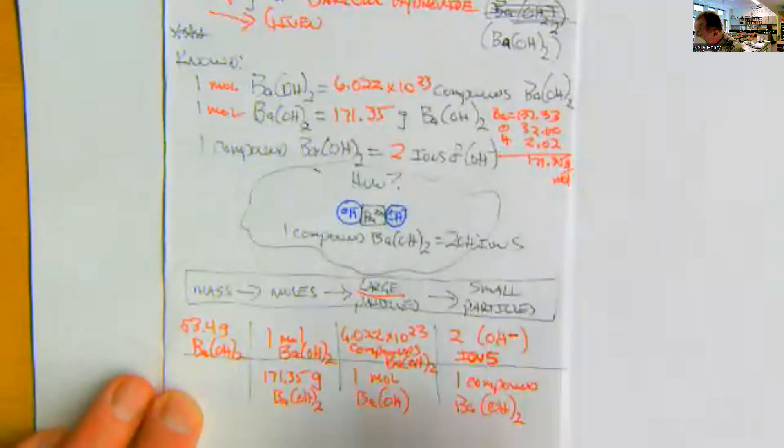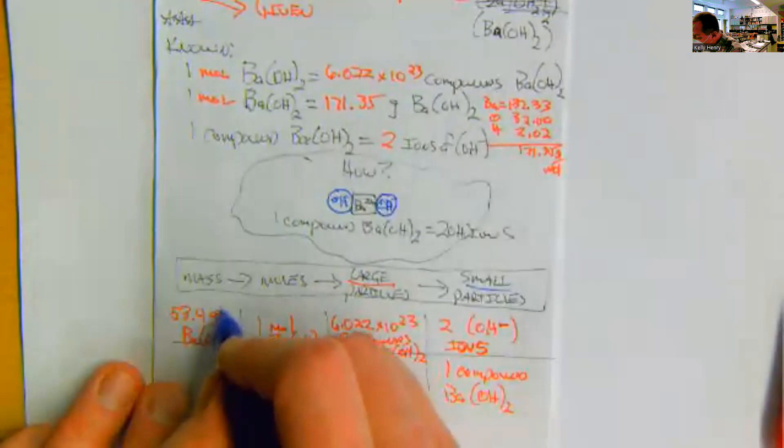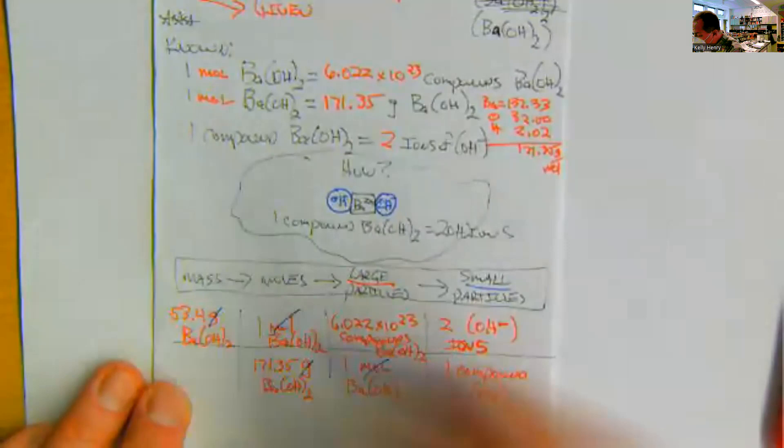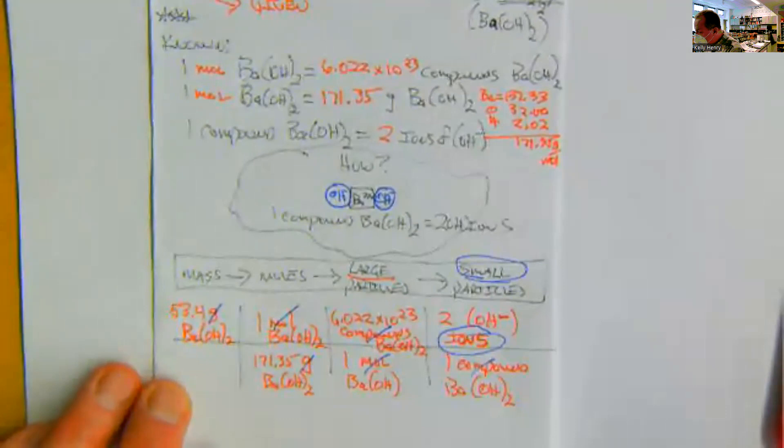Now that we've set up our equation, let's check our units. We're trying to calculate the number of small particles — in this case, ions. Grams cancel with grams, moles cancel with moles, and the large particles (compounds) cancel, leaving us with ions — which is what we're trying to find: how many hydroxide ions are in 53.4 grams of barium hydroxide.